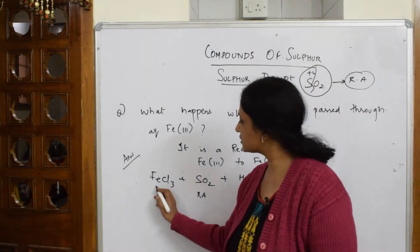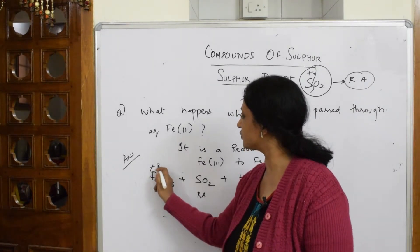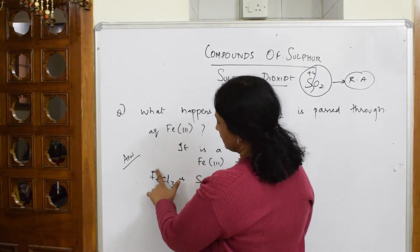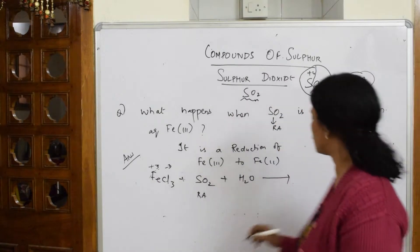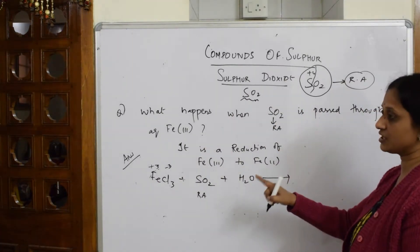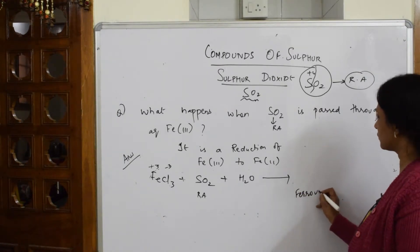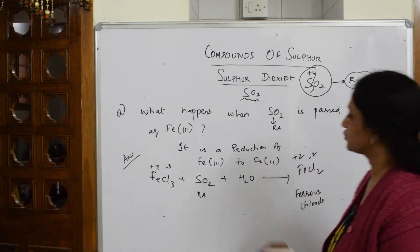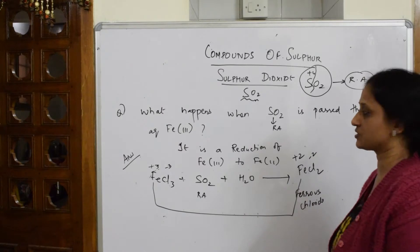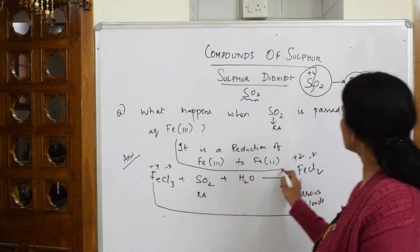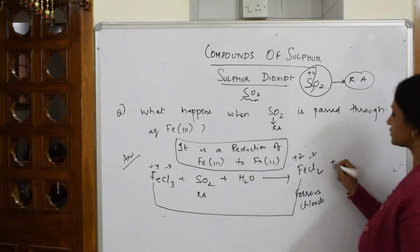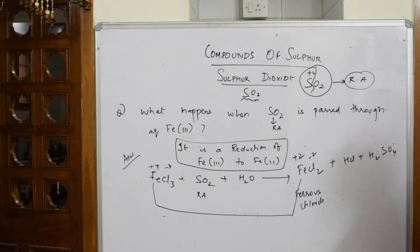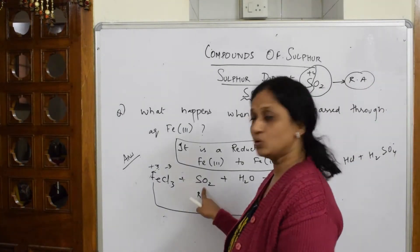Observe carefully: you are going to get three important products. The oxidation state of Cl is minus one, so Fe is plus three; this gets converted to ferrous chloride, FeCl₂, where Fe is plus two. So from plus three it is converted to plus two — that is the reduction of Fe³⁺ to Fe²⁺. Apart from FeCl₂, the other two products are HCl and H₂SO₄.